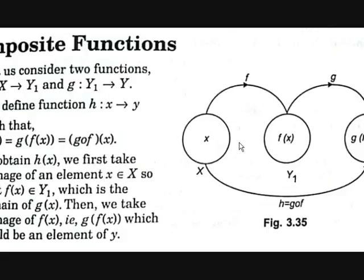Let us consider two functions as you can see on this picture. The first function is f, that is from x to y1 — as you can see here, x to y1 is f. And let's consider another function g, that is from y1 to y. Now, if we want another function h such that if you input an x value it results in a y value — a function from x to y — then h of x will be g of f of x.